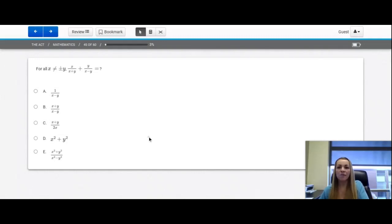Question number 45. For all x does not equal plus or minus y, x over x plus y plus y over x minus y equals. What we have here is we have a set of two fractions. And to add fractions, we need common denominators. So this doesn't have an x minus y part and this one doesn't have an x plus y part. Let's make those common denominators. This term needs this x minus y part.